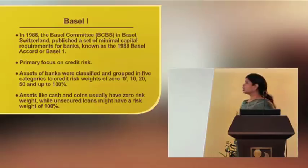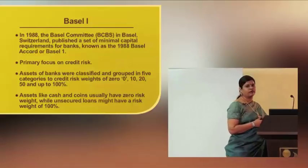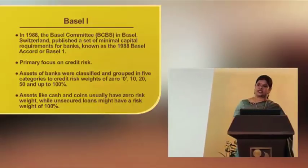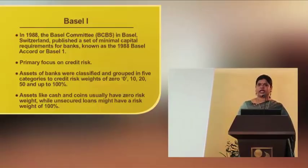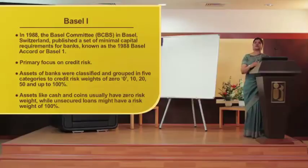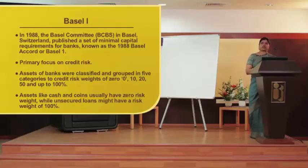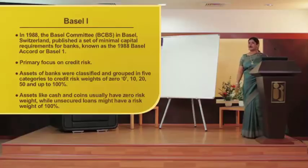Assets like cash and coins usually have zero risk weight, as there is no credit risk involved with cash — it is 100% liquidifiable. While unsecured loans might have a risk weight of 100%, wherein there is no security attached to that type of lending. They are unsecured, and that's the reason the risk is pretty high, up to 100%.